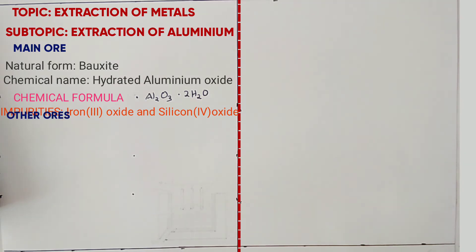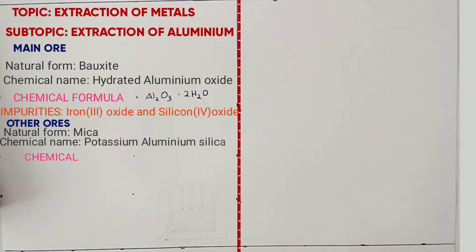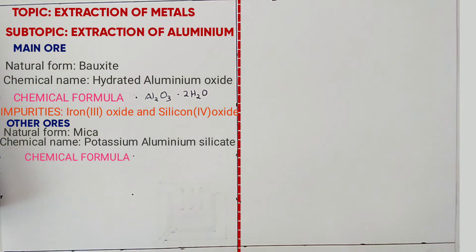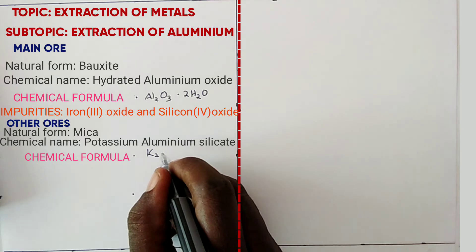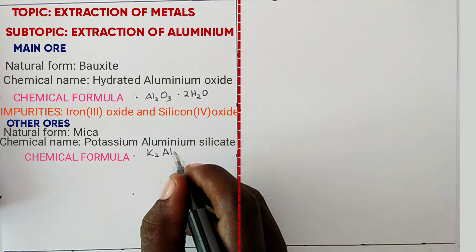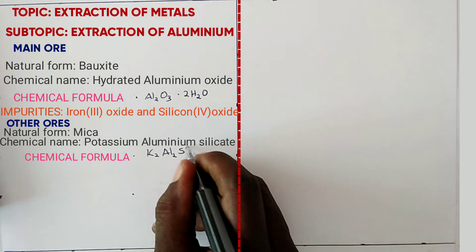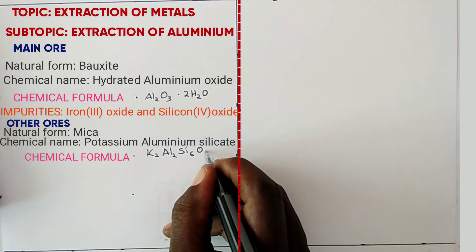The other ore in its natural form is called mica. The chemical name is potassium aluminium silicate. The chemical formula is K2Al2Si6O6.